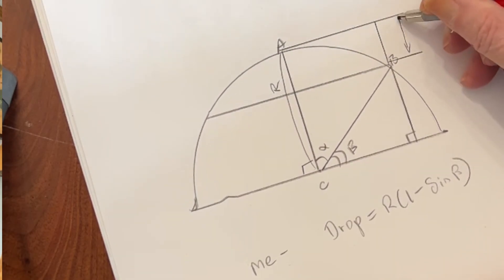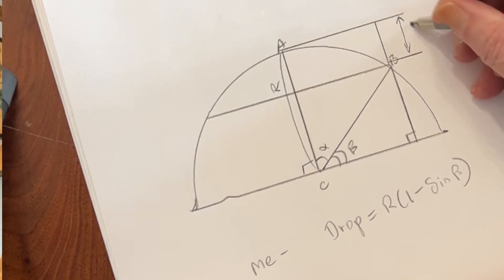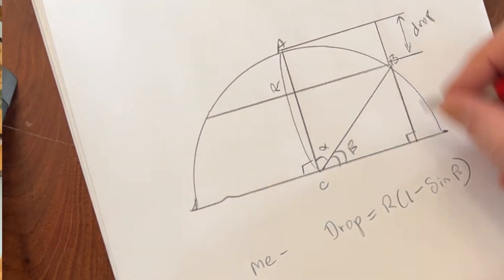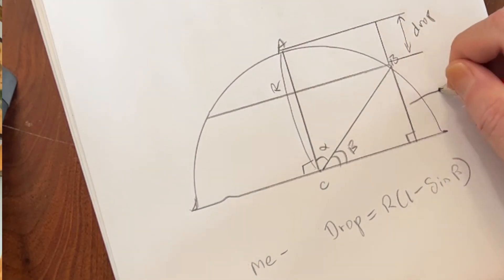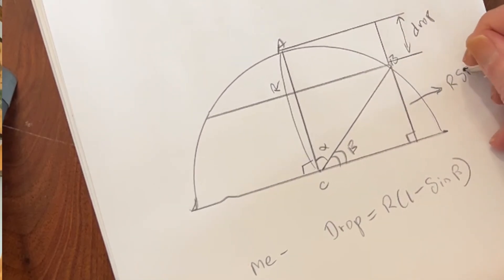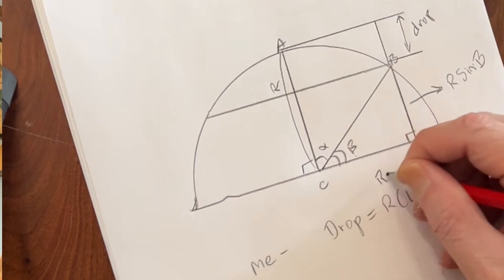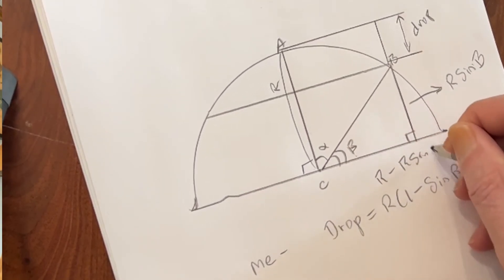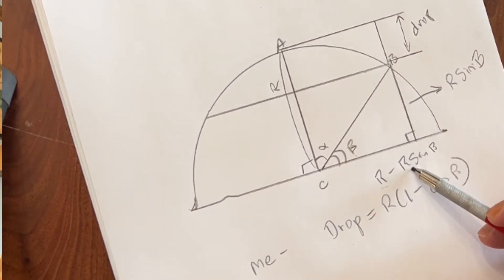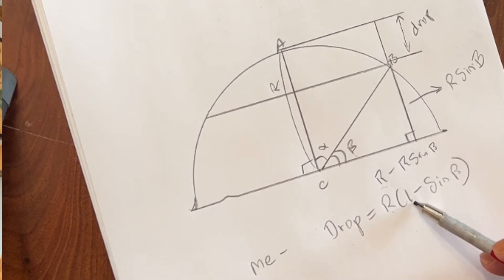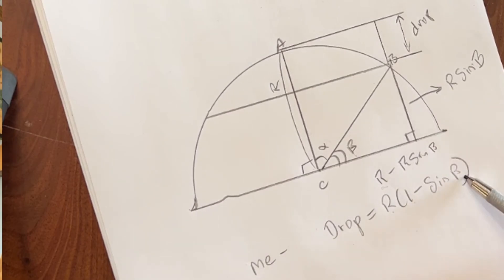Let's go over the problem and then my approach to the problem. Now if we have two individuals, one at A and one at B, on the surface of a sphere of radius R, the question becomes how do we measure the drop between the horizontal at A to position B — in other words, this distance right here.